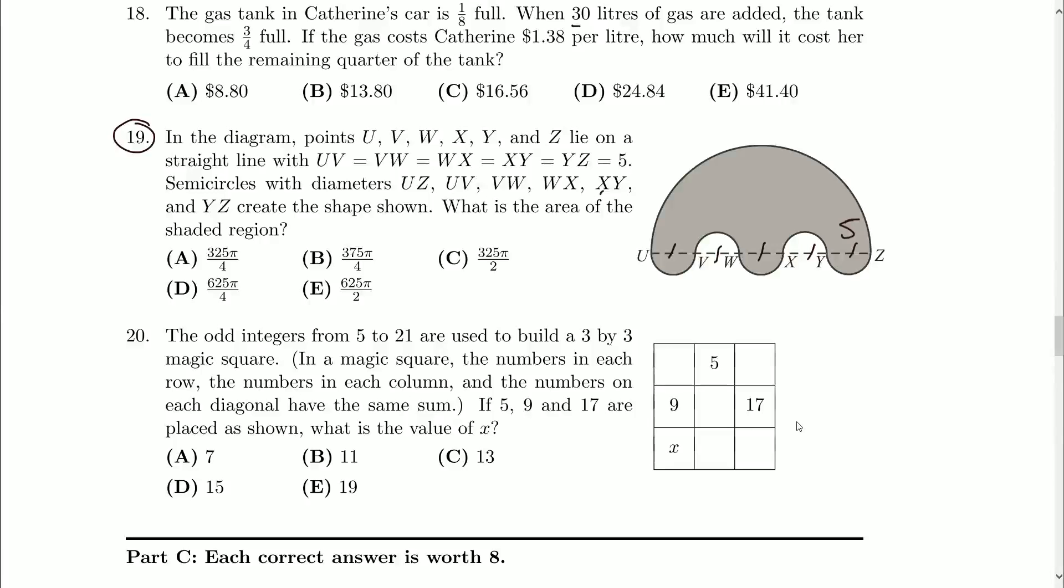Semicircles with diameter UZ, so the big one here, UV, VW, WX, XY, and YZ create the shape shown.